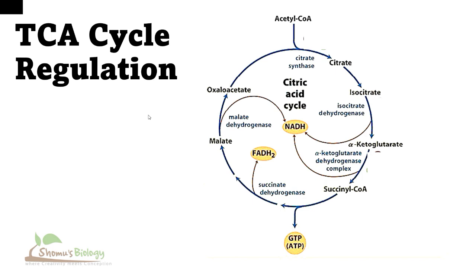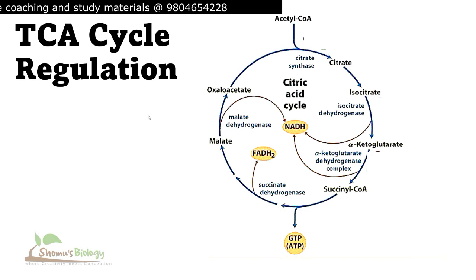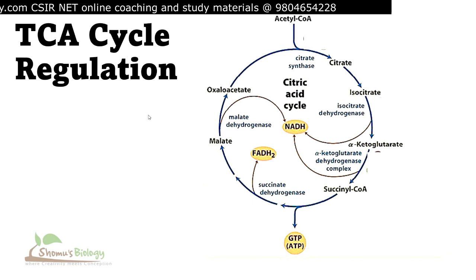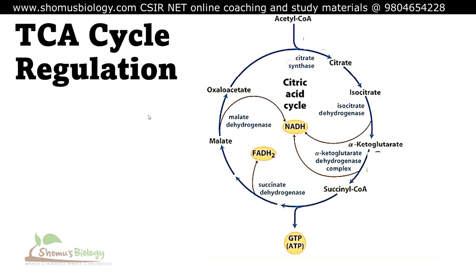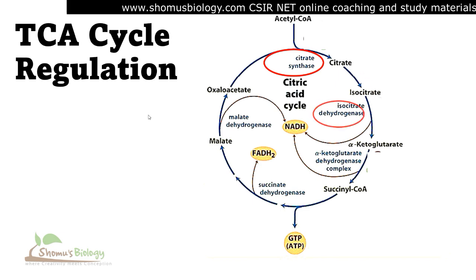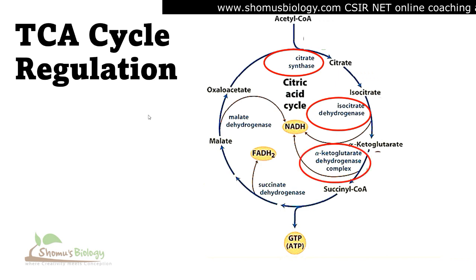In the TCA cycle, there are three important unidirectional or irreversible stages, and these are the sites where regulation occurs. The regulation of the TCA cycle also takes three forms: substrate clearance, product inhibition, and allosteric regulation. The three regulated stages are: first, citrate synthase converting acetyl-CoA and oxaloacetate to form citrate; second, the conversion of isocitrate to alpha-ketoglutarate by isocitrate dehydrogenase; and third, the alpha-ketoglutarate dehydrogenase complex converting alpha-ketoglutarate into succinyl-CoA.